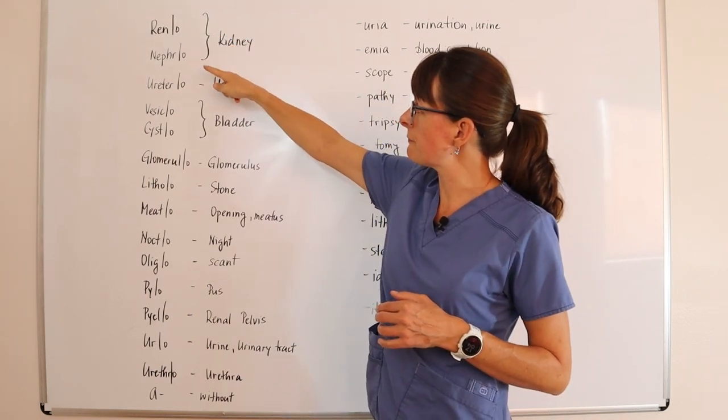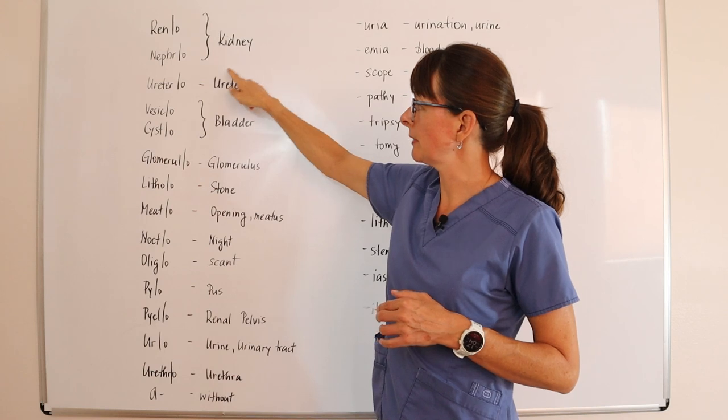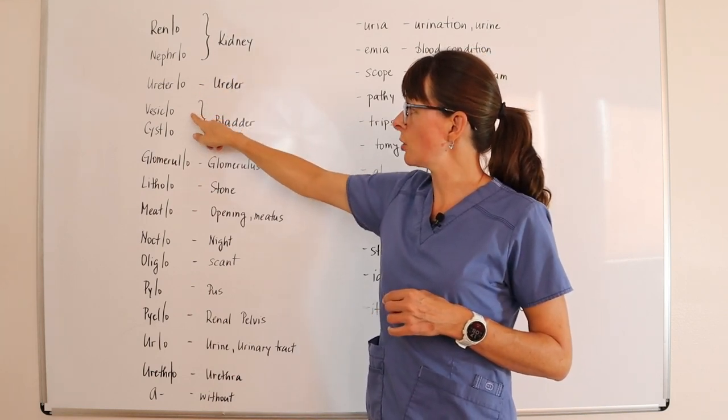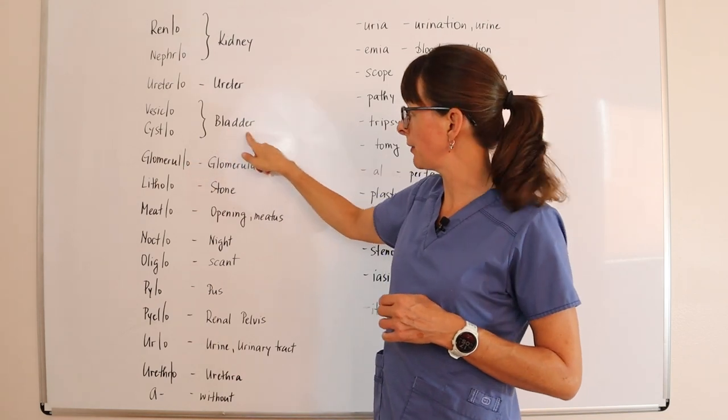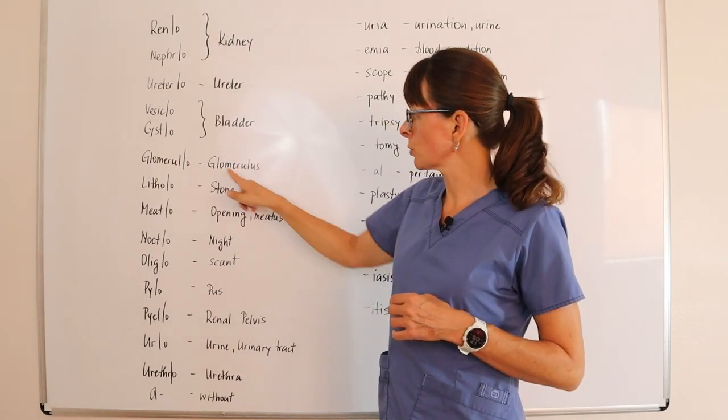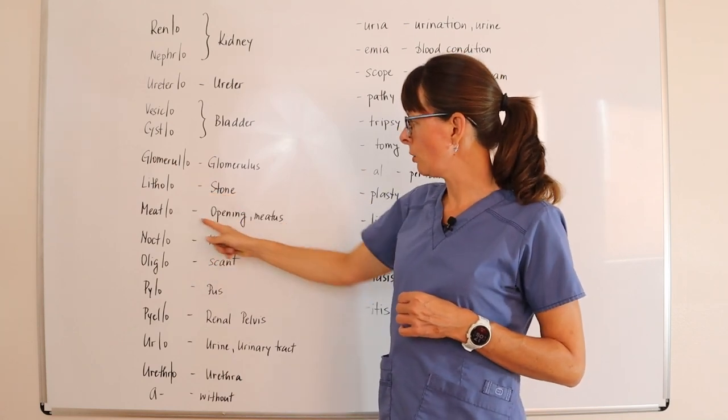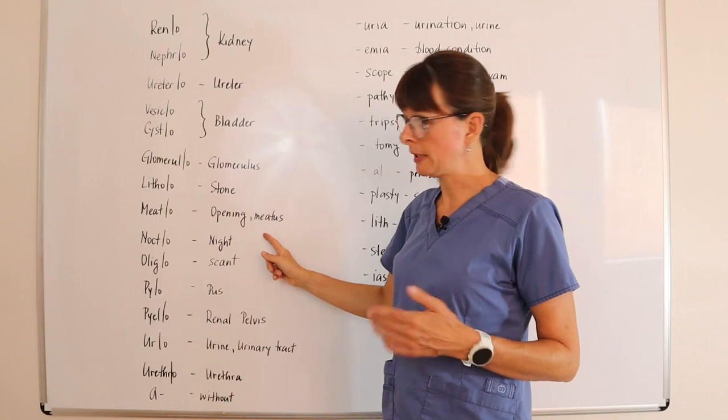Renal or nephro pertains to the kidney, ureteral to the ureter, vesicle or cysto to the bladder, glomerulo to the glomerulus of the kidney, litho means stone, meato means opening or meatus.